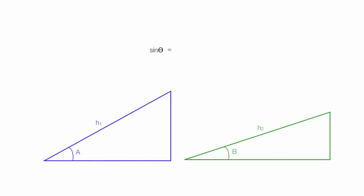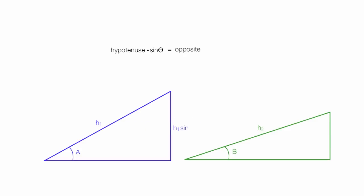Recall that sine theta is equal to the opposite divided by the hypotenuse. So I can write this as hypotenuse times sine theta is equal to the opposite side. That blue right there — that's the opposite side of the angle. So that's equal to h1, the hypotenuse, times sine of a. That's the length of the opposite side. For the green triangle, the opposite side is going to be h2 times sine of b.